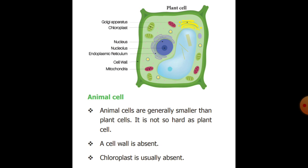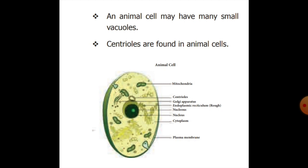The plant cell contains a chloroplast, nucleus, and endoplasmic reticulum, as well as a cell wall. In animal cells, chloroplasts are usually absent. Centrioles are found in animal cells but are absent in plant cells.